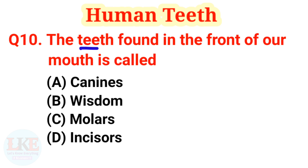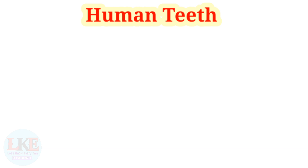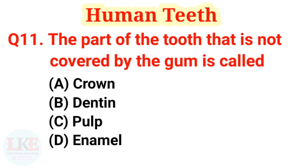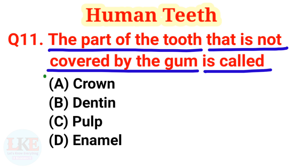Question number 10: the teeth found at the front of our mouth are called incisors. We have a total of 8 incisor teeth — 4 in the upper jaw and 4 in the lower jaw. Question number 11: the part of the tooth that is not covered by the gum is called the crown.